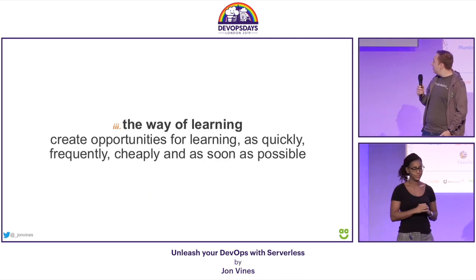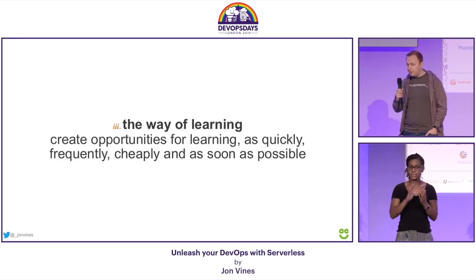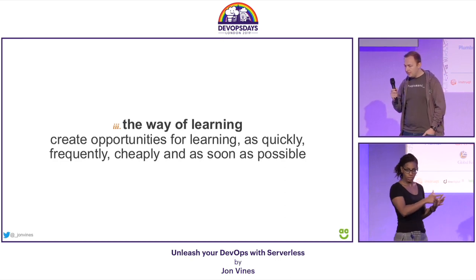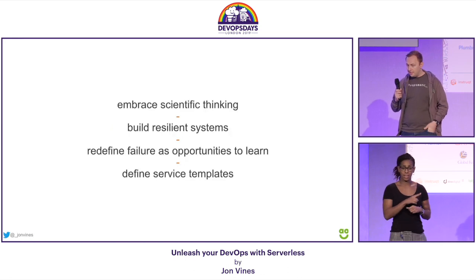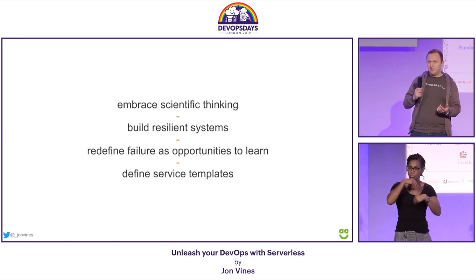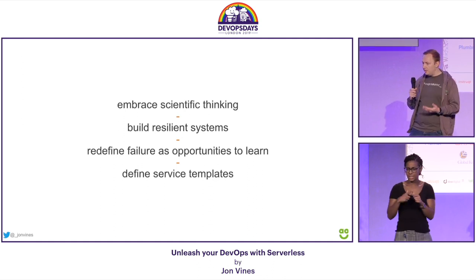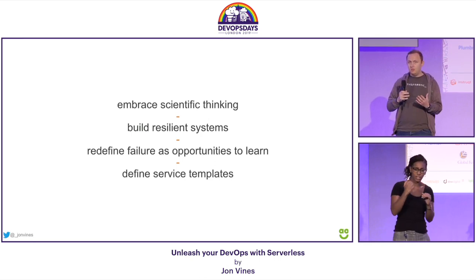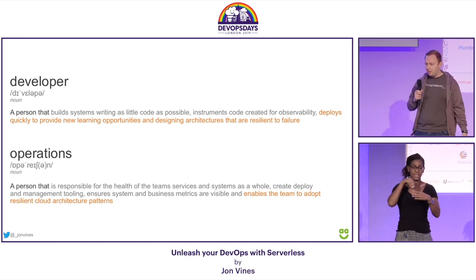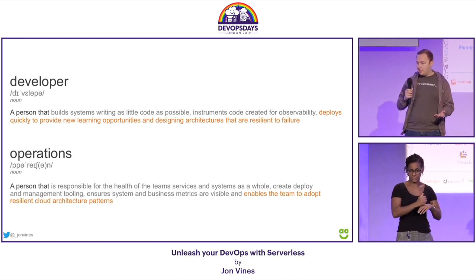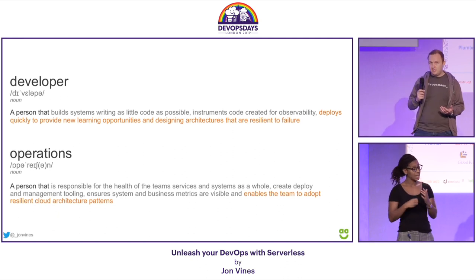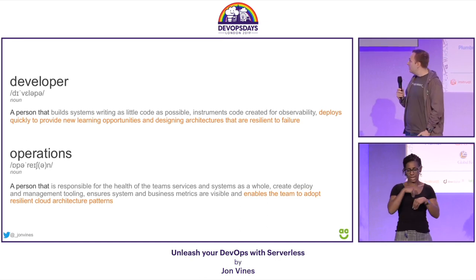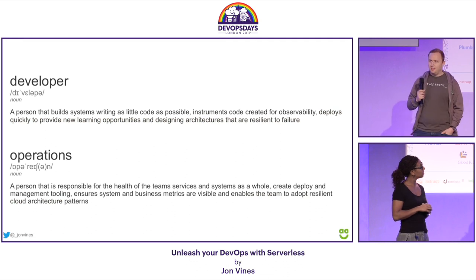Finally, the way of learning — creating opportunities for learning as quickly, frequently, cheaply, and as soon as possible. Serverless really helps here as it's quick to get new things up and running. We need to embrace scientific thinking with fast PDCA cycles — plan, do, check, act — build resilient systems, redefine failures as opportunities to learn using failure injection testing, and apply those learnings into service templates. A developer is now a person that deploys quickly to provide new learning opportunities and designs resilient architectures, while operations enables the team to adopt resilient cloud architecture patterns.